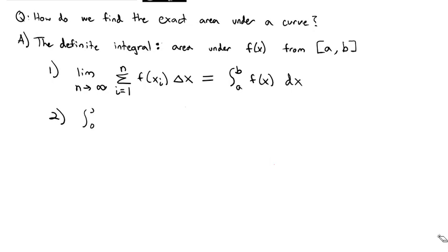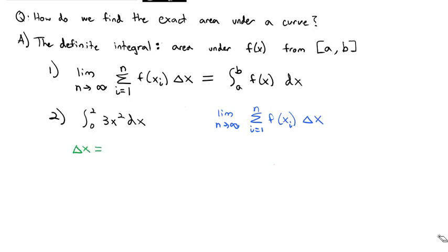Let's take the integral from 0 to 2 of 3x² dx, keeping in mind that the limit as n goes to infinity of the sum from i=1 to n of f(x_i) times delta x equals the integral. Let's break down the pieces. Delta x is the high minus the low divided by n — in this case, 2 minus 0 over n — so delta x equals 2 over n.